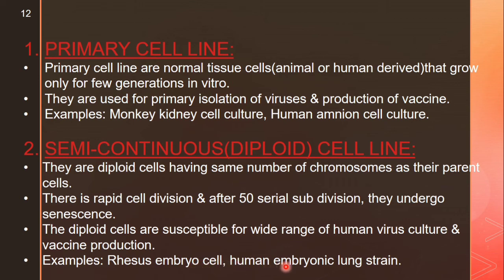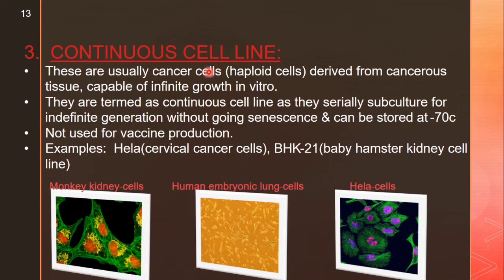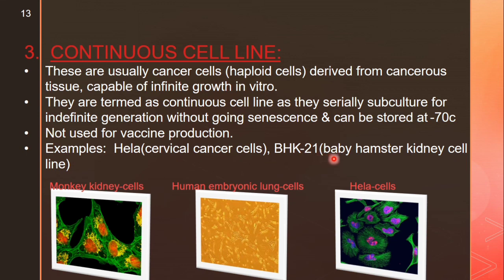Continuous cell lines are usually cancer cells — haploid cells derived from cancerous tissues — capable of infinite growth in vitro. They are termed continuous cell lines as they can be serially subcultured for indefinite generations without undergoing senescence, and can be stored at minus 70 degrees centigrade. They are not used for vaccine production. Examples include HeLa cervical cancer cells and BHK-21 baby hamster kidney cell line.